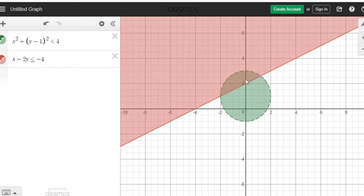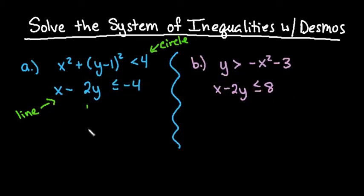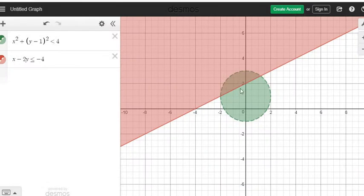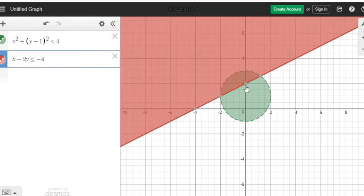I'll go ahead and write it down so that you can see how to do this on paper. We would see that our circle has a center at 0, 1. Then I would go out 2 in each direction. I would do a dotted circle because of the fact that it does not include it. For the line, you can get the points from Desmos — if I click on the red line, it gives me a point.